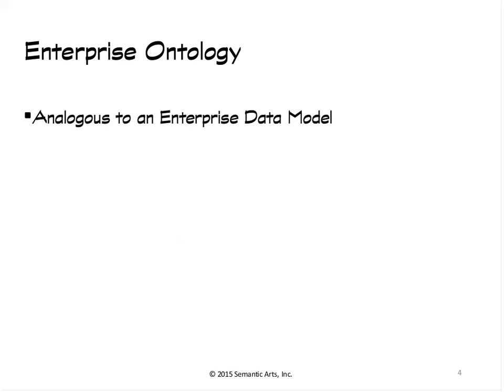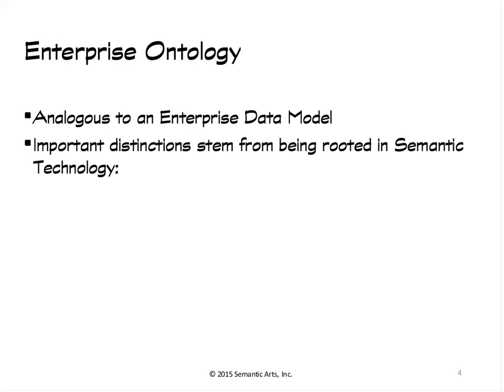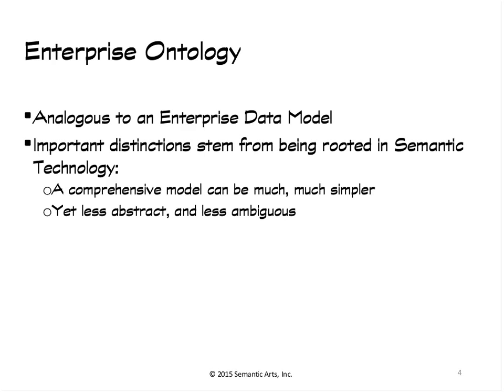At some level, an enterprise ontology is sort of like an enterprise data model — at first approximation, that's pretty much true. But there are several things that distinguish it, most of which come from the fact that this kind of model is built with semantic technology. It's possible with this technology to build a model that's comprehensive — including either all of an enterprise or whatever large subset you're working with — but at the same time be much, much simpler than the data models we used to build.